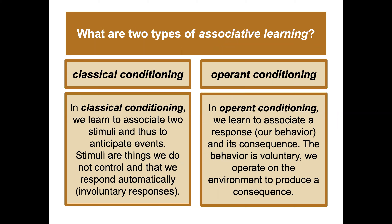In classical conditioning we learn to associate two stimuli and anticipate events. The stimuli are things we do not control, and we respond automatically — these are involuntary responses. In operant conditioning, we learn to associate a response or behavior with its consequence. For example, being very polite might earn praise or a tangible reinforcement like a piece of chocolate.